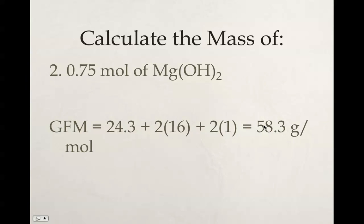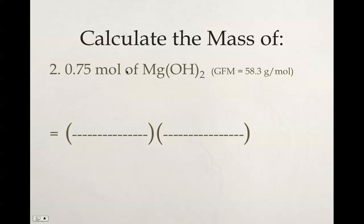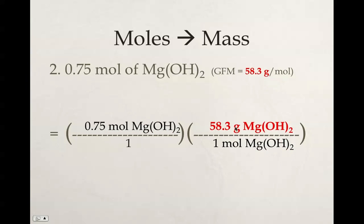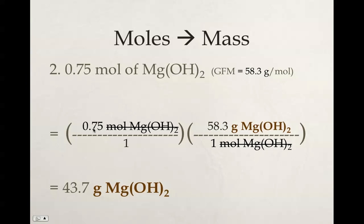Try this one out on your own and then check your work. You should have found the GFM is 58.3 grams per mole. Remember, you have two oxygens and two hydrogens. We then start with what we're given, which is 0.75 moles of magnesium hydroxide. We then place moles in the denominator of our conversion factor. So 1 mole of magnesium hydroxide equals the GFM, 58.3 grams of magnesium hydroxide. These moles cancel out, so we're left with grams of magnesium hydroxide, which is what we're looking for. 0.75 times 58.3 gets you 43.7 grams of magnesium hydroxide.